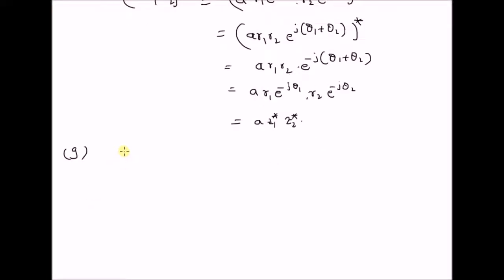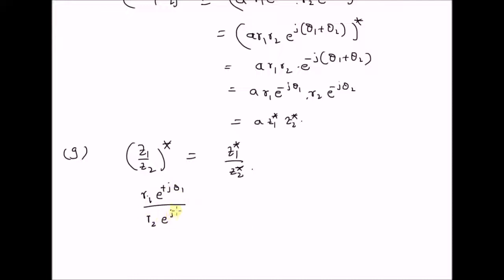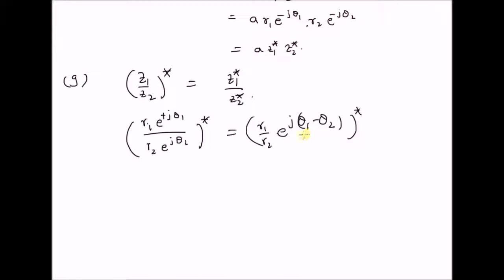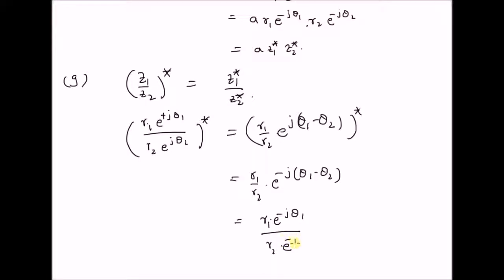The next property is distribution of conjugation over a ratio, that is the conjugate of the ratio of two complex numbers is equal to the ratio of the conjugates of the original complex numbers. Starting with the LHS, we have r1 times e power plus j theta1 over r2 times e power j theta2, whole conjugate. This equals r1 by r2 multiplied by e power j times theta1 minus theta2, with conjugate taken. This is a single complex number with amplitude r1 by r2 and phase theta1 minus theta2, so its conjugate is r1 by r2 multiplied by e power minus j into theta1 minus theta2. Upon rewriting, we have r1 e power minus j theta1 divided by r2 e power minus j theta2, which is clearly equal to z1 conjugate divided by z2 conjugate.